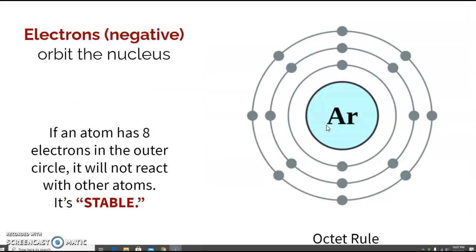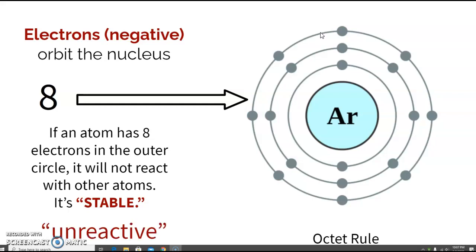The electrons are negative and they're going to be in these energy levels, sometimes we call those orbits. Something really important to understand about electrons is that if there's eight electrons in the outermost level, an atom is considered stable, which kind of means it's boring because it doesn't react—it's non-reactive.